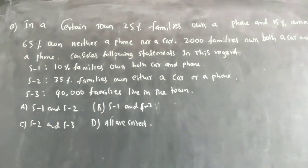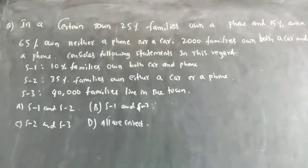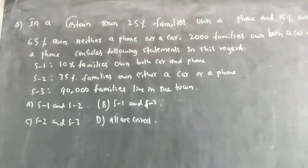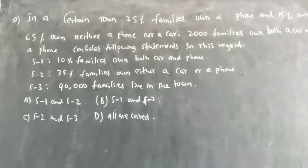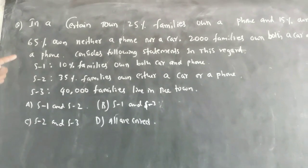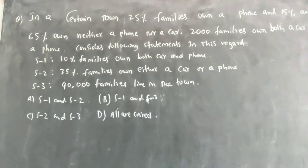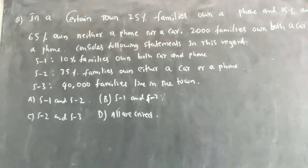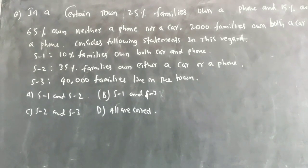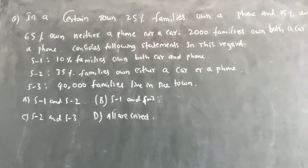Let us see here. In a certain town, 25% of families own a phone and 15% own a car. 65% own neither a phone nor a car. 20,000 families own both. Consider the following statements: S1 is 10% of families own both car and phone.